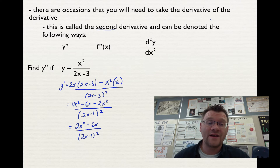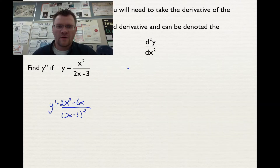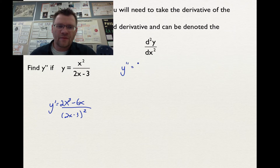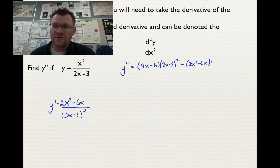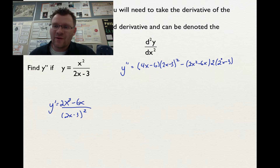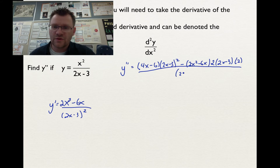In order to take the second derivative, I need to take the derivative of the first derivative. Using the quotient rule again, I take the derivative of the top, which is 4x minus 6, multiplied by the bottom (2x minus 3) squared. Then I leave the top 2x squared minus 6x and take the derivative of the bottom using the chain rule: 2 times (2x minus 3) subtract 1 from the exponent, then multiply by the derivative of what's inside the brackets, which is 2. That's all over (2x minus 3) to the fourth power, because we square the bottom.